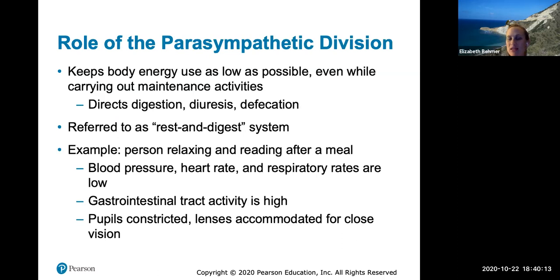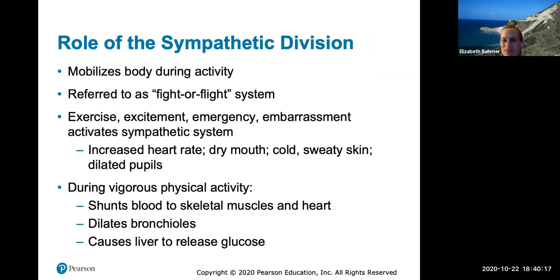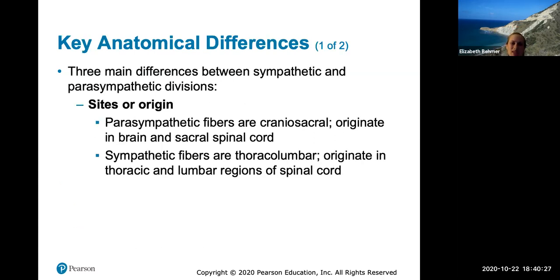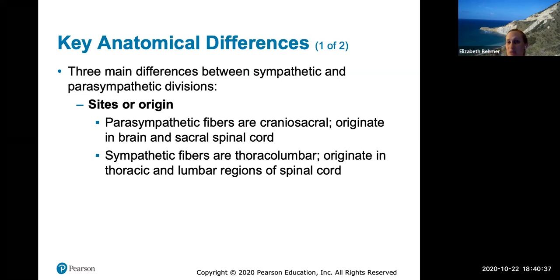Those two slides on the roles of the parasympathetic and sympathetic divisions are worth memorizing — they could answer at least half the chapter's questions. There are three main differences between the two: first, the site of origin. Parasympathetic fibers originate in the cranial region — the brain — and the sacral spinal cord, making it the craniosacral division. Sympathetic fibers originate in the thoracic and lumbar regions of the spinal cord.